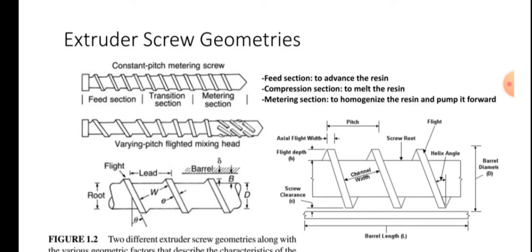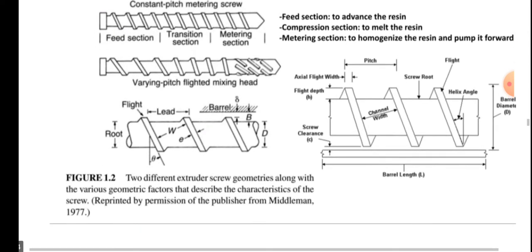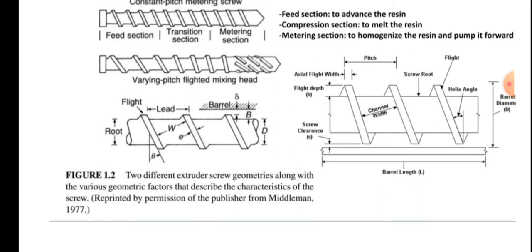The geometric parameters of the screw include: axial flight width, pitch, screw root, channel depth, channel width, helix angle, barrel diameter, screw clearance, and barrel length (denoted as capital L). These are the various geometric factors that describe the characteristics of the screw, as shown in the extruder screw geometries figure.